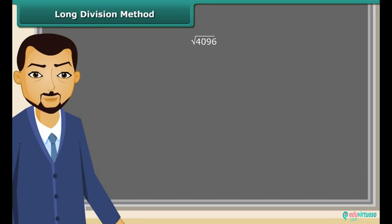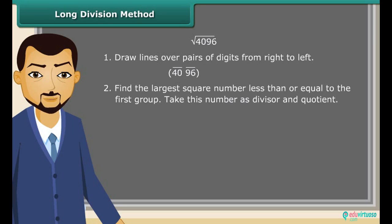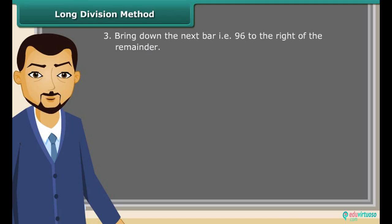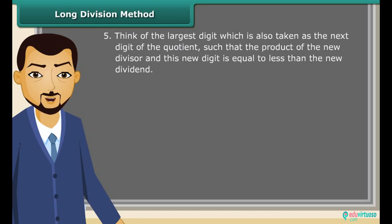Since 36 is less than 40, so we take 6 as the divisor and 6 as the quotient. Now subtract 36 from 39. After that bring down the next bar, that is 96, to the right of the remainder. Now double the divisor. Next think of the largest digit which is also taken as the next digit of the quotient, such that the product of the new divisor and this new digit is equal to or less than the new dividend. Here we have 124 multiplied by 4 equal to 496. Since the remainder is 0, so the square root of 4096 is 64.